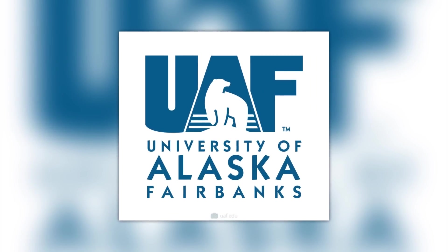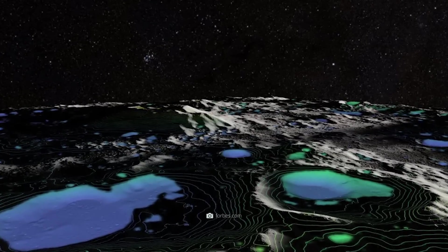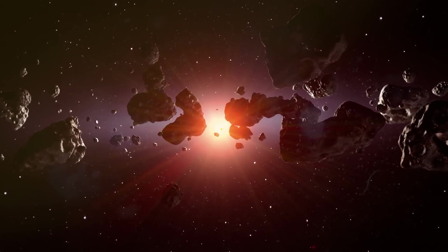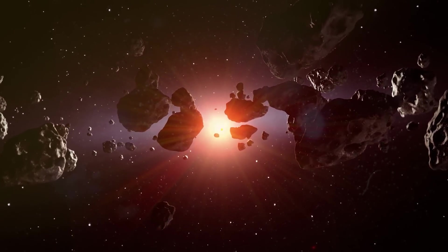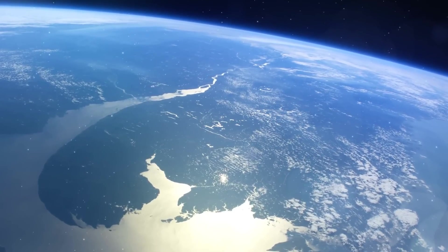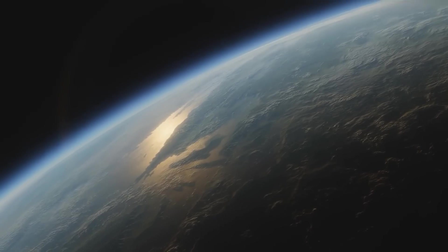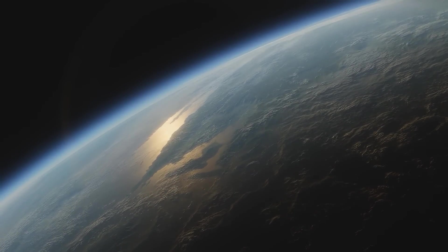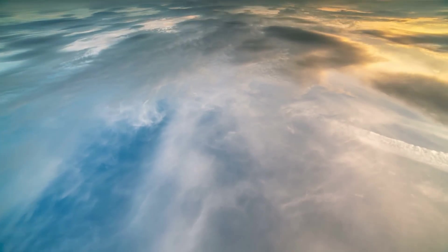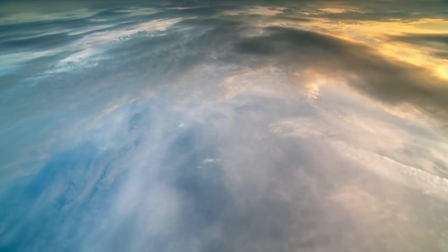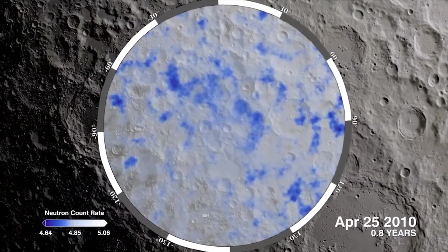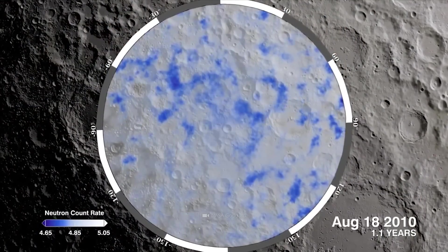But where does the water on the Moon actually come from? Well, a new study of the University of Alaska Fairbanks shows that a part of the water did not come as so far assumed in the context of asteroid impacts on the satellite, but has its roots in the terrestrial atmosphere. If one follows the explanations of the experts, then oxygen and hydrogen ions from the upper atmosphere of our homeland planet detach themselves and afterwards on the Moon, together found.